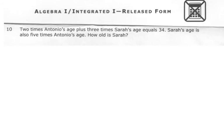Number 10, 2 times Antonio's age plus 3 times Sarah's age equals 34. Sarah's age is also 5 times Antonio's age. How old is Sarah? Well, we have a couple unknowns here. We have Antonio. We have no clue how old Antonio is, and we don't know how old Sarah is, and it just wants to know how old is Sarah. So I'm going to let my two unknowns be A for Antonio, and I don't like using the letter S, so I'm just going to pick R for Sarah. I'll just pick out the R in the middle part of her name.